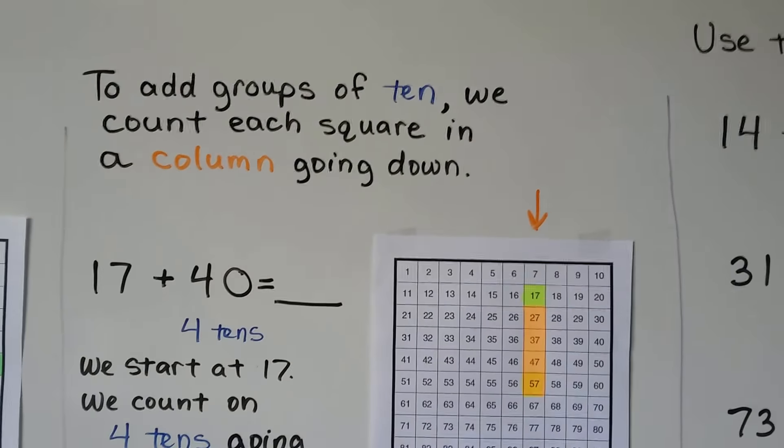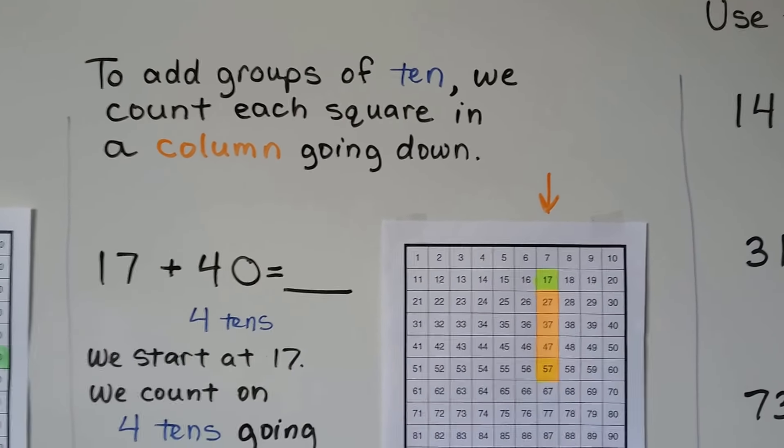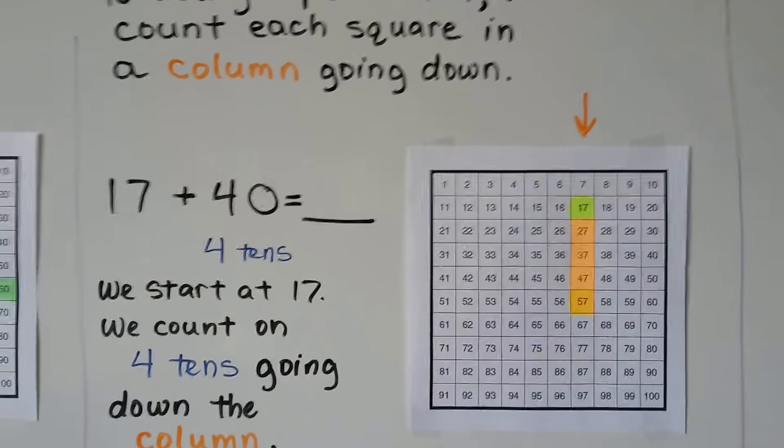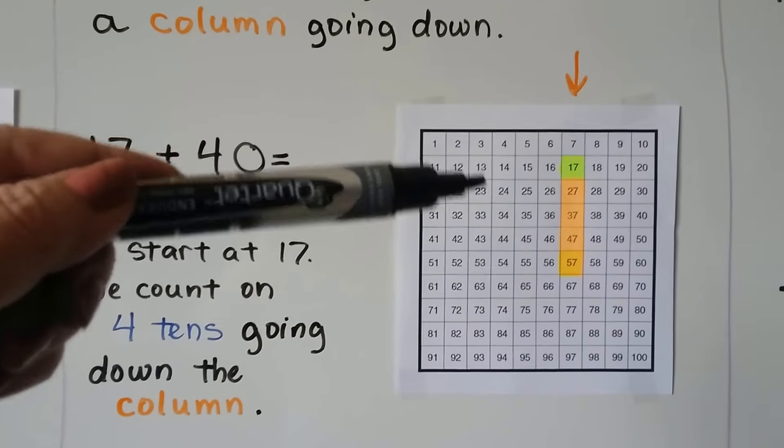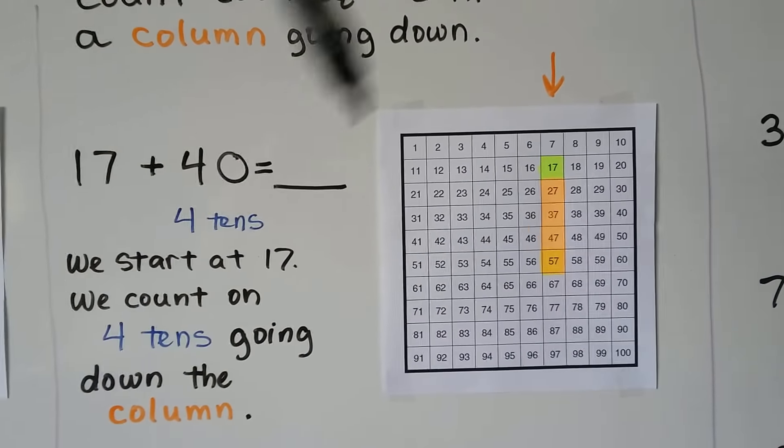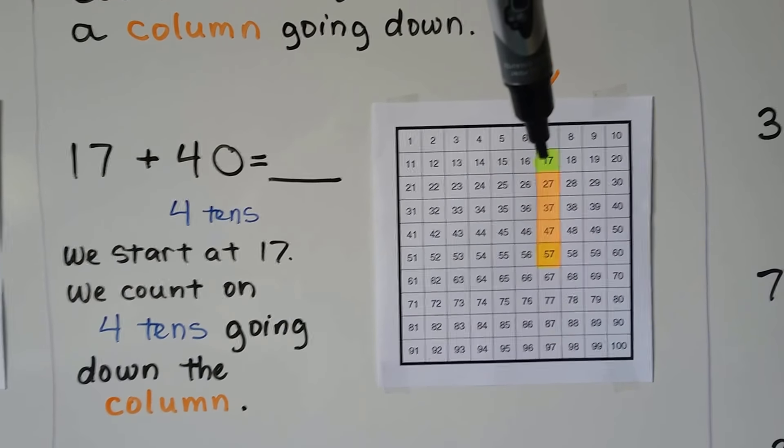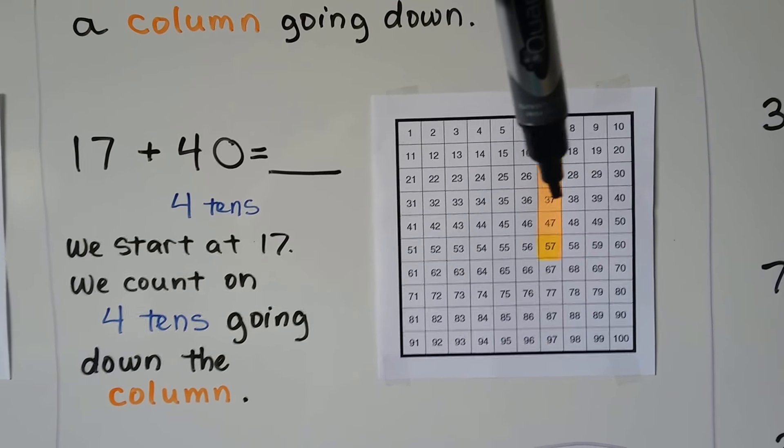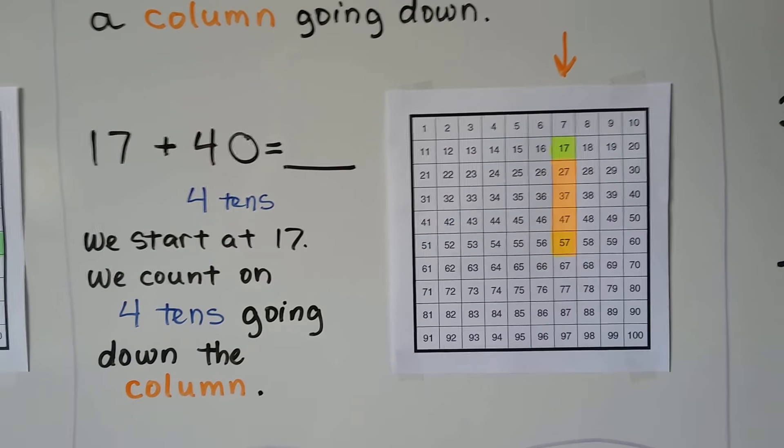To add groups of 10, we count each square in a column going down. Each row is a 10. So as we go down the column, we can say 1, 2, 3, 4 tens.